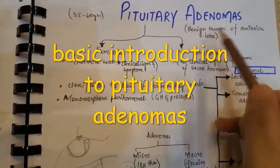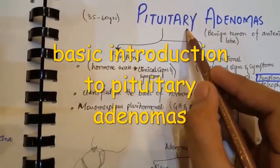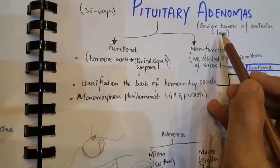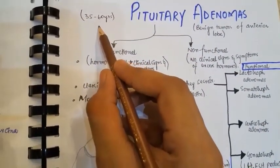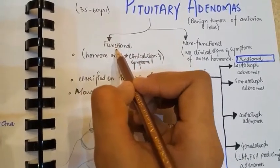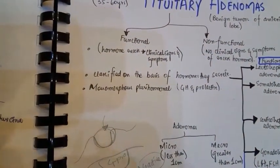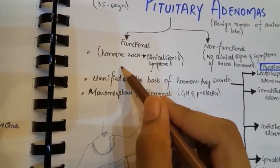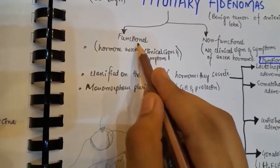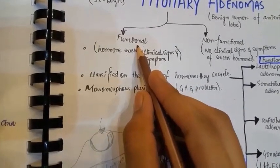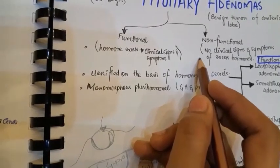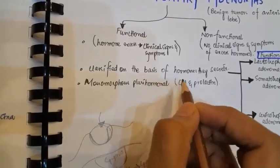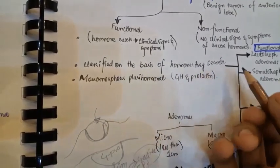Pituitary adenomas are basically benign tumors of the anterior lobe of the pituitary gland. They are common between 35 to 65 years of age. These can be functional and non-functional. Functional adenomas produce clinical signs and symptoms due to hormonal excess, while non-functional adenomas show no clinical signs or symptoms of excess hormone.